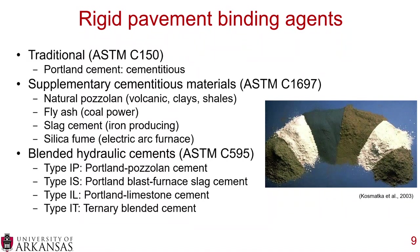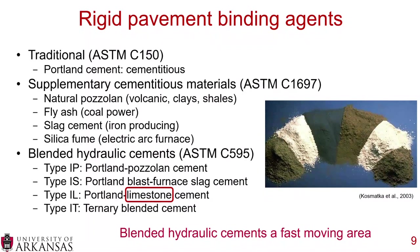Even more recent are blended hydraulic cements per ASTM C595, which combine Portland cement with other materials: Type 1P (Portland cement and pozzolan), Type 1S (Portland cement and blast furnace slag), Type 1L (Portland limestone cement), and combinations of those. Adding limestone dust to rigid pavements is a particularly fast-moving area — definitely one to keep an eye on.